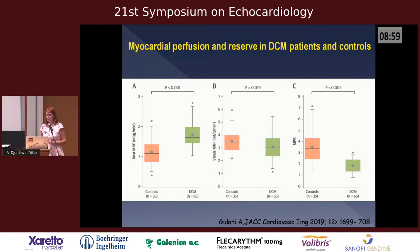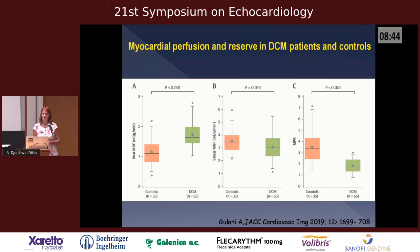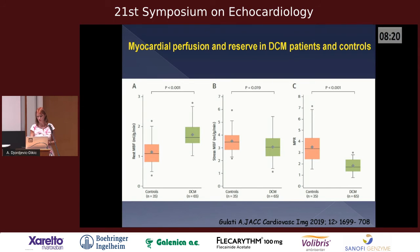This was demonstrated in the work of Galati, who measured myocardial perfusion and reserve in dilated cardiomyopathy patients versus controls. At the left-hand side you can see that resting perfusion flow is actually higher in dilated cardiomyopathy patients, but during stress they cannot increase their perfusion — remaining at a lower level than controls. The perfusion reserve is therefore very small compared to controls.